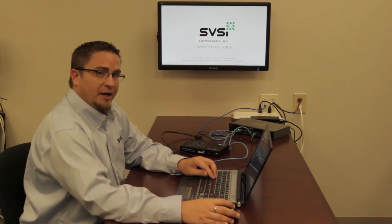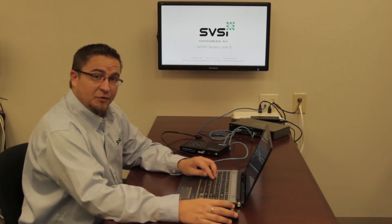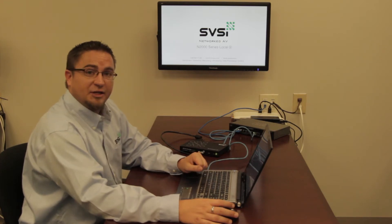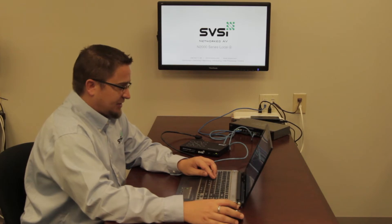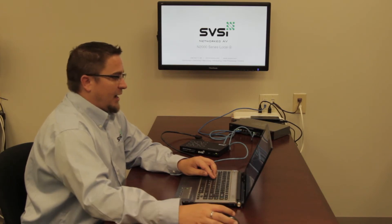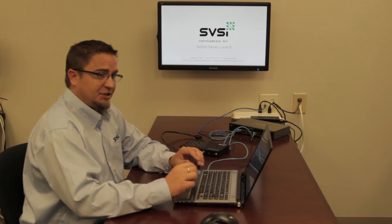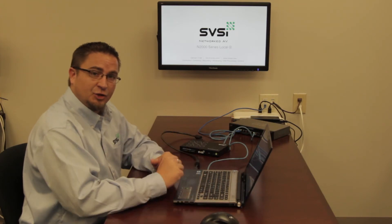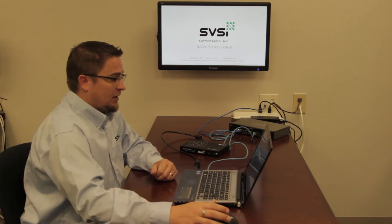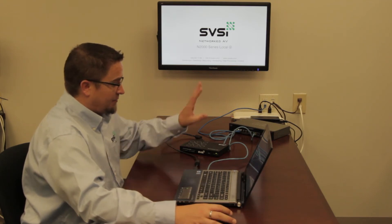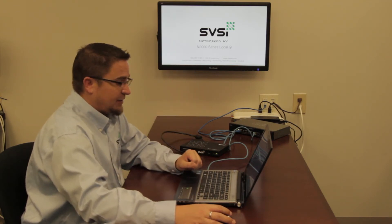So when I first open up Netlite I have no devices. The first step is I need to discover all SVSI devices. To do that I'm going to click on the unit management tab and then the auto discover button. What this does is it launches out some broadcast packets to look for our devices that are in our unique IP configuration. So now I've found my monitor and I've found my source.